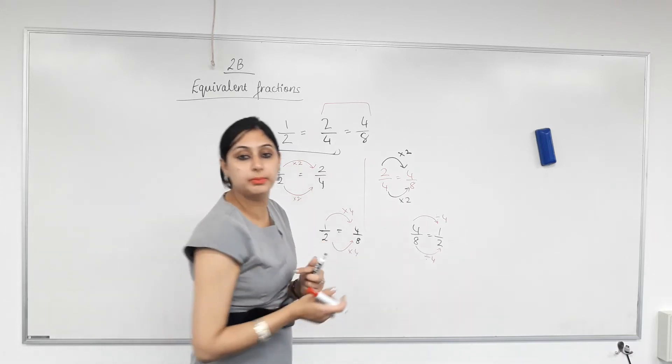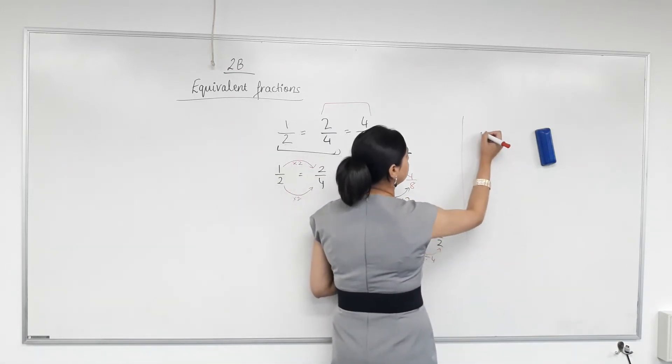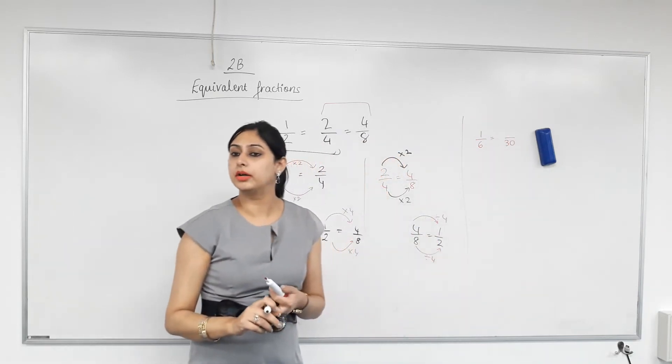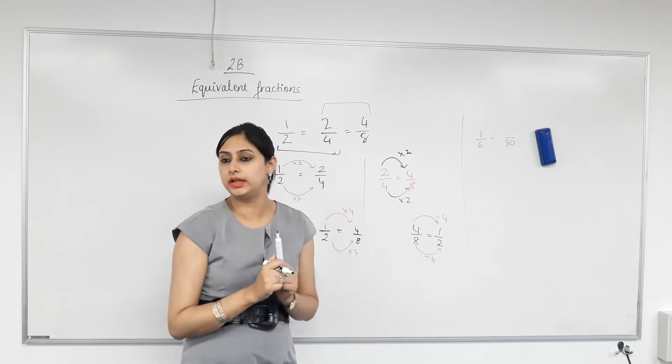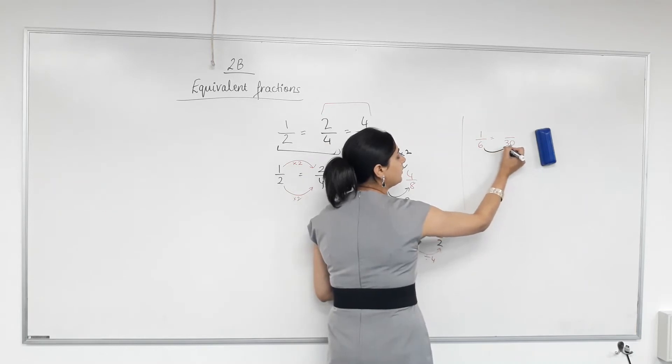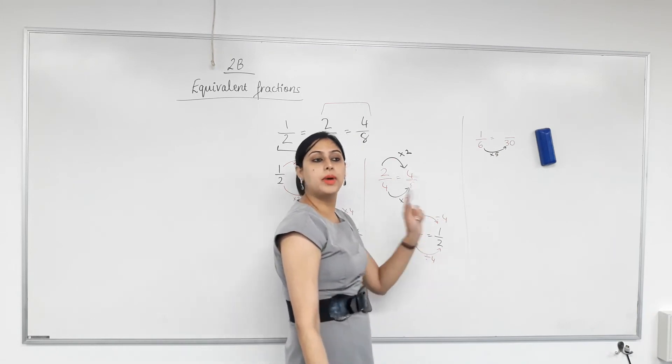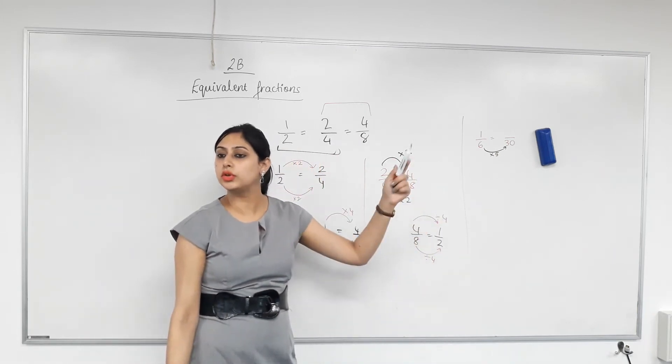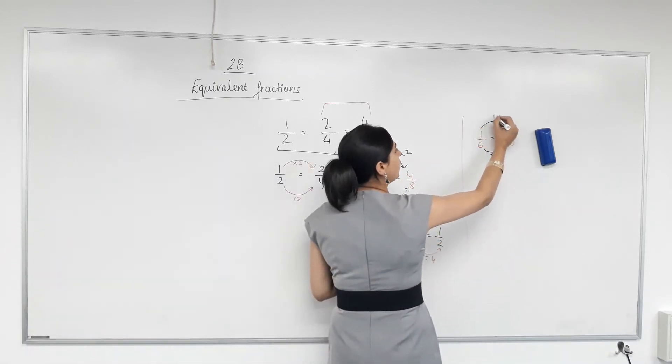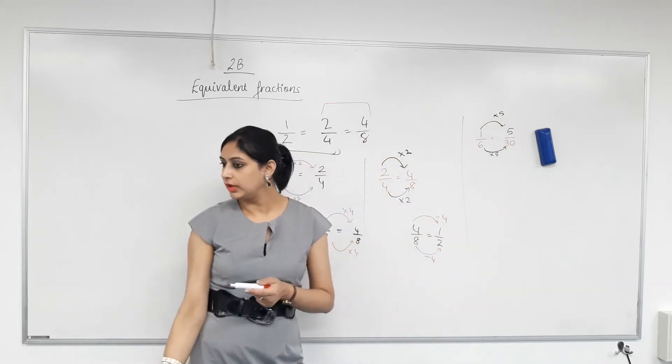Now we can use this to find missing numbers. Everything down and focus. Now you have to find the missing number. You know that one sixth is equal to something over 30. So you think, okay, what has been multiplied or divided by six to get 30? We know that six times five is 30. Yes. So we have multiplied the bottom by five. What must we do to the top? Same thing, times by five. So what would one times five be? Five. That's it. Equivalent fraction. Happy?